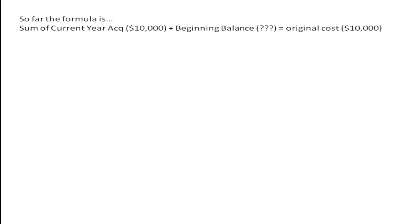So far in our example, the sum of all the current year acquisitions for this item is $10,000. The beginning balance is unknown, and the original cost is $10,000. If the beginning balance amount is zero, this formula would be correct. If that was the case, there wouldn't be a 103 error report, so we need to look at the beginning balance amount for further information.